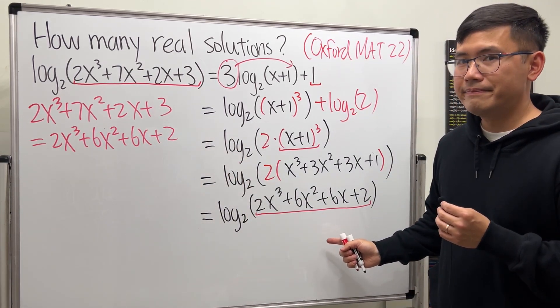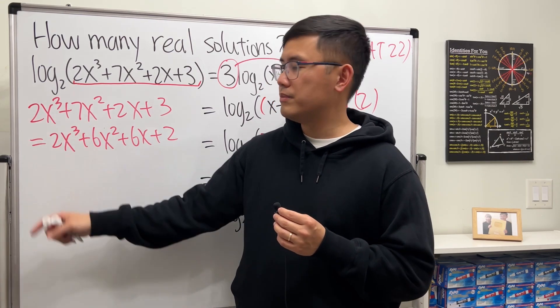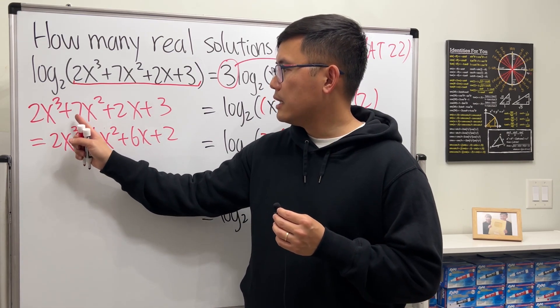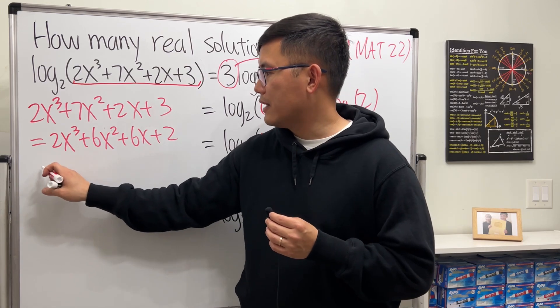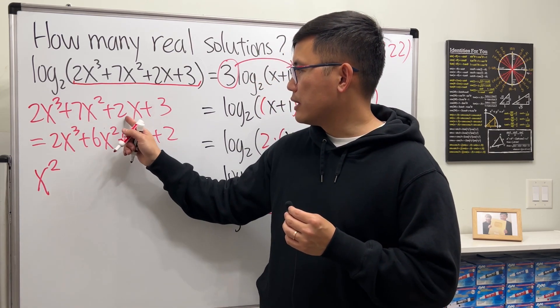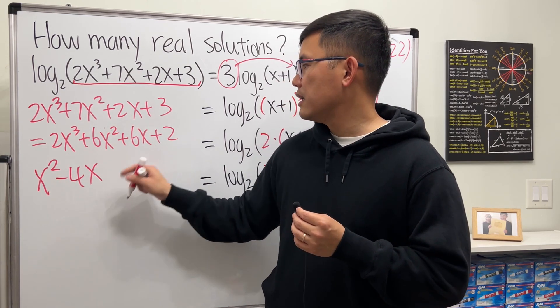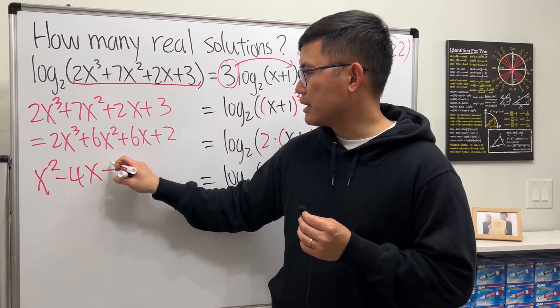Clean things up. Move this to the left hand side where they cancel. Move this to the other side: 7 - 6 we have 1, and that's the x² term. Then move this to the other side: 2 - 6 we get -4x. And then 3 - 2 we have +1.